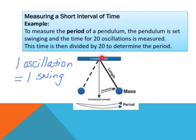This diagram here illustrates what's meant by one oscillation or one swing. If you start timing from here, then you have to let the pendulum swing right to the other side and back again. That's one swing or one oscillation.